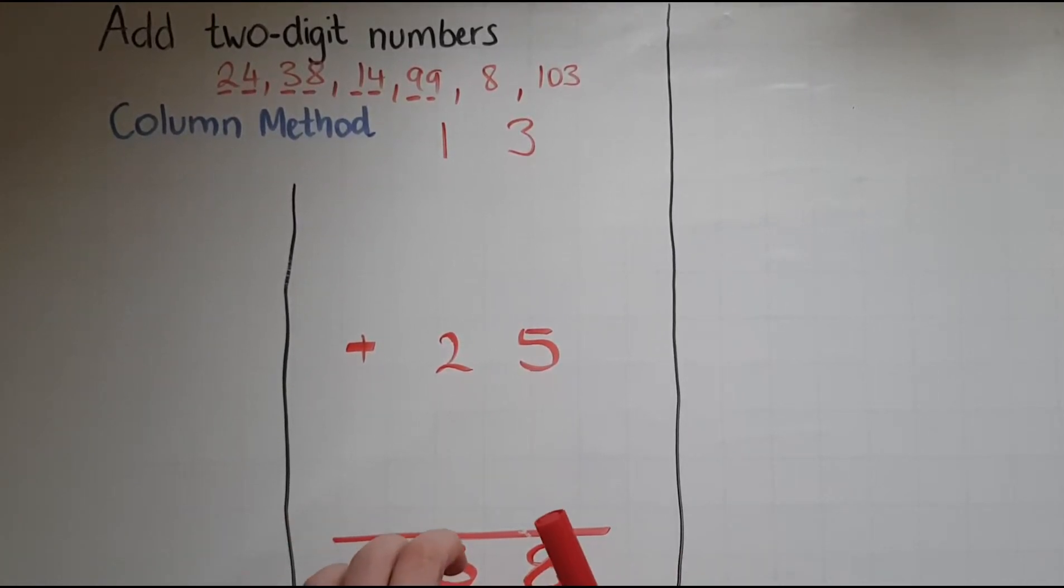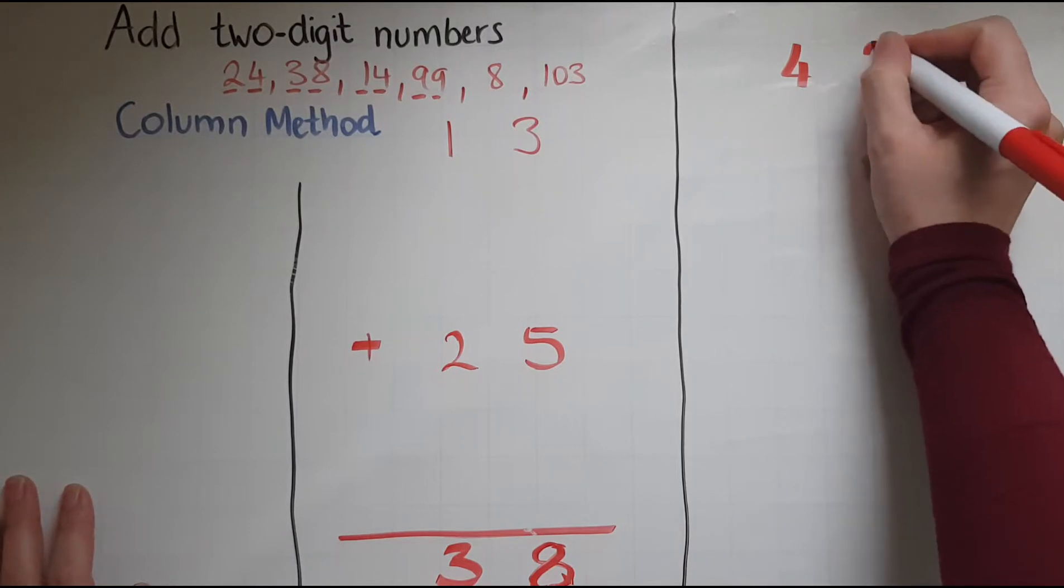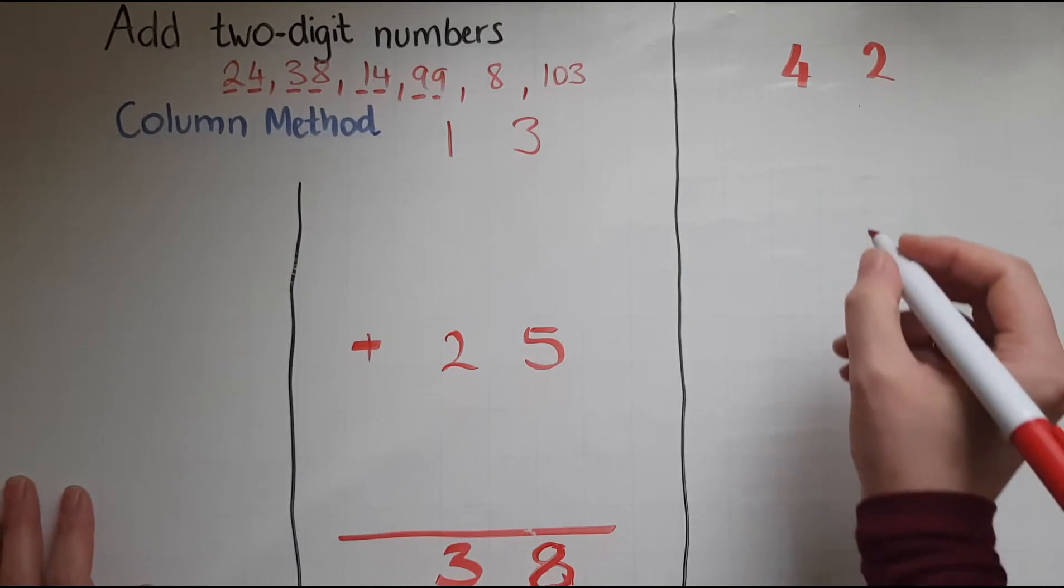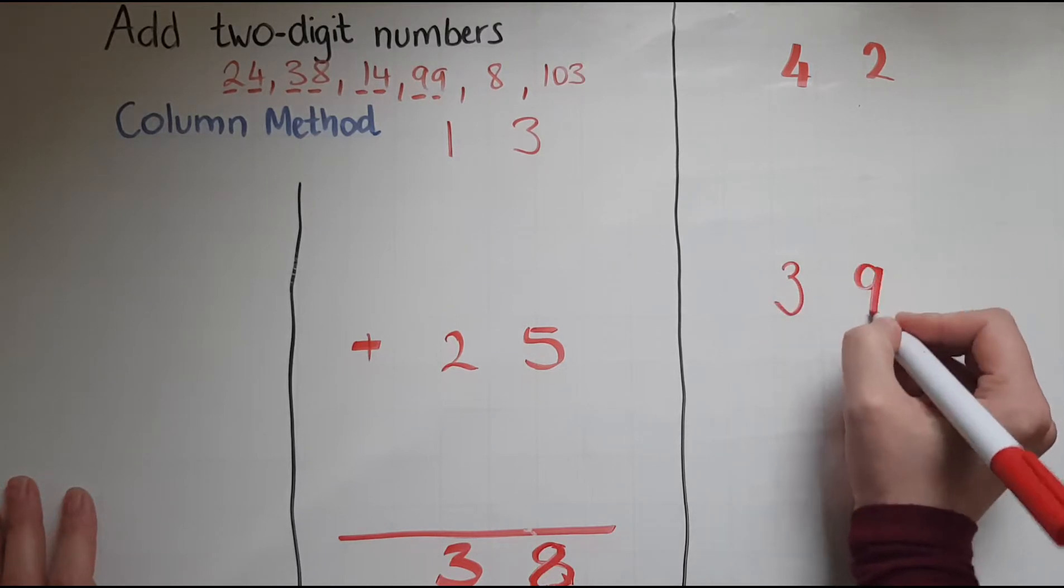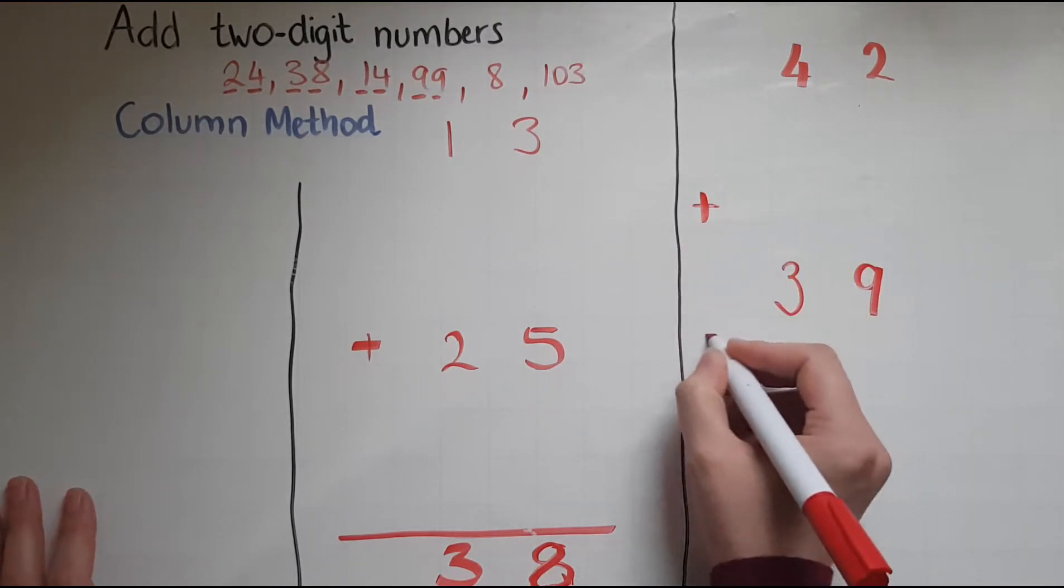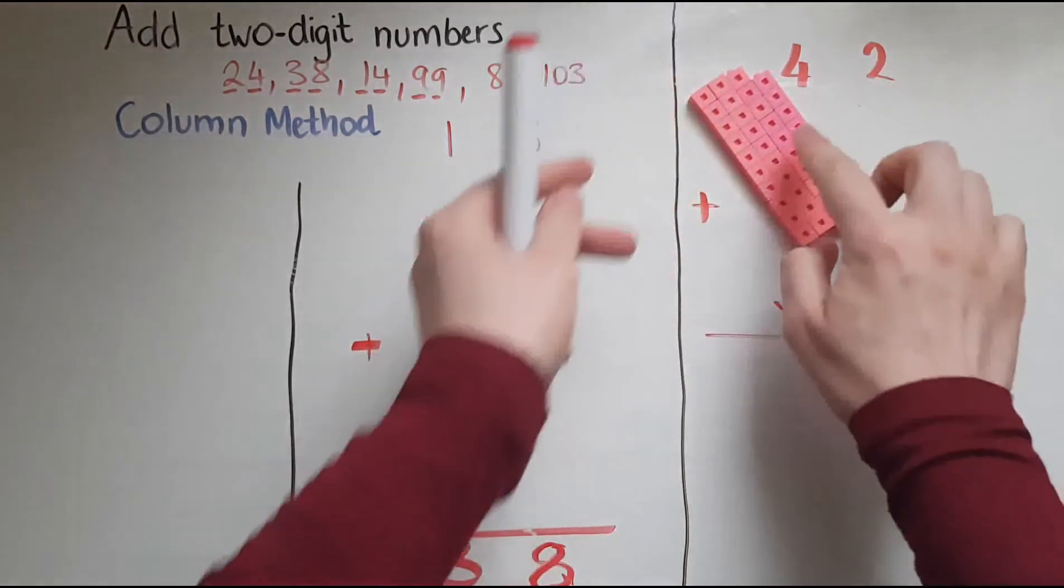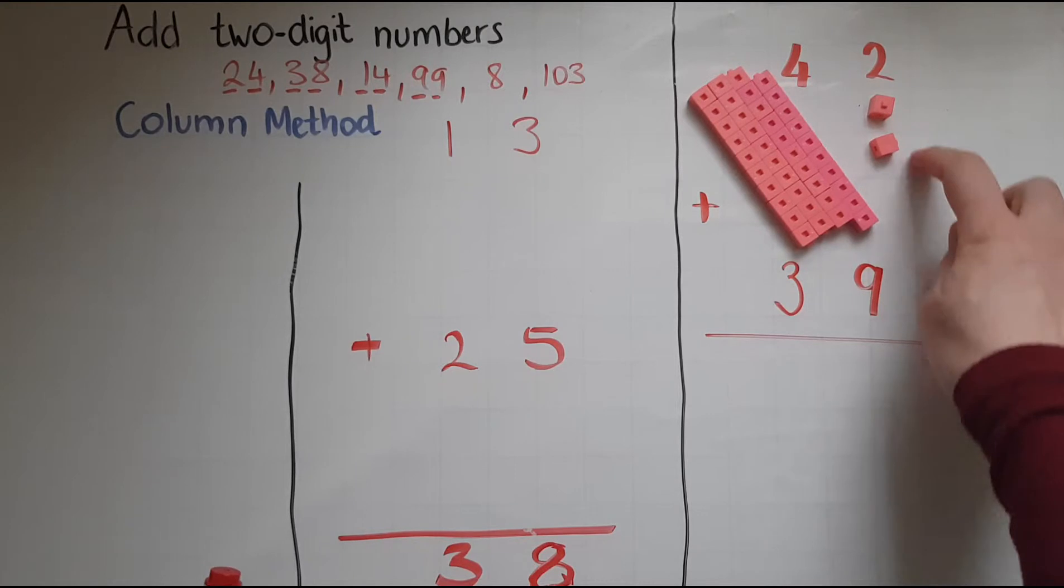Now I will look at another example. I'm going to add 42 and 39 and we'll work out the answer. So I'll represent 42, 4 blocks of 10 represented by this 4 here, and we've got two single cubes, the units.